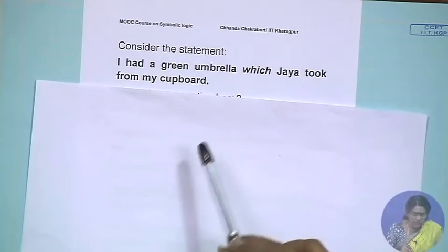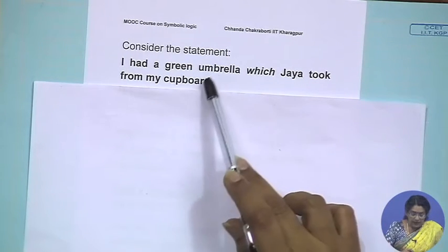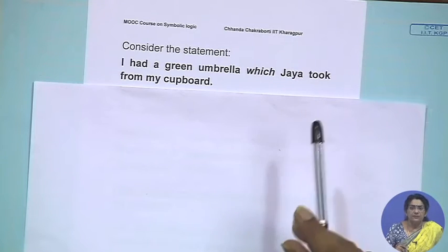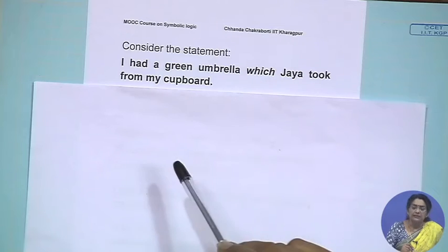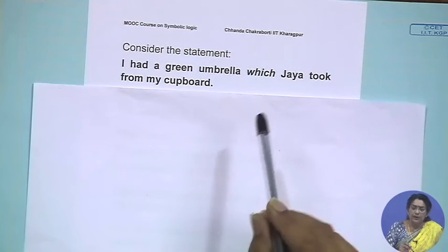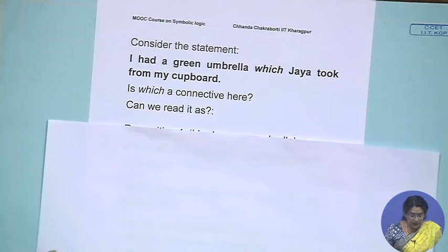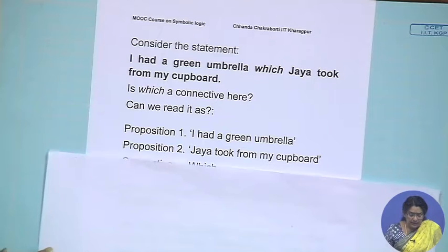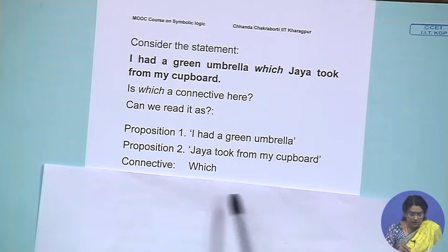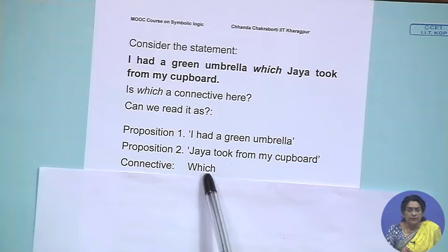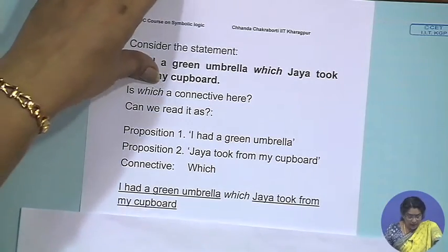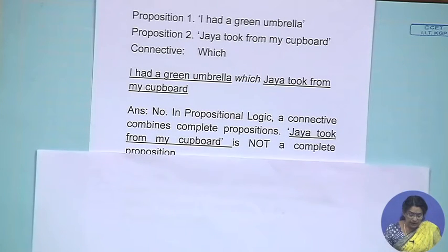Let us consider this statement: 'I had a green umbrella which Jaya took from my cupboard.' You will say there are two components. Is the 'which' a connective here? That is what we are trying to find out. Can we read the whole sentence as a combination of two propositions where 'which' is acting as the connective? The answer is no.